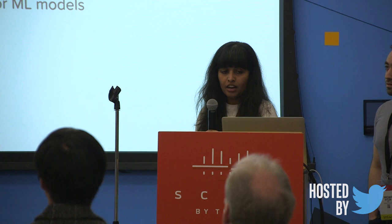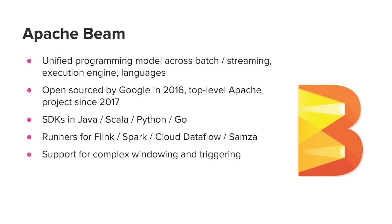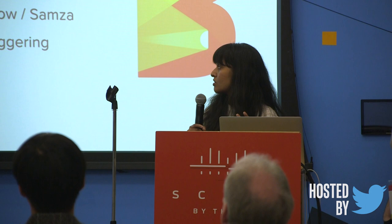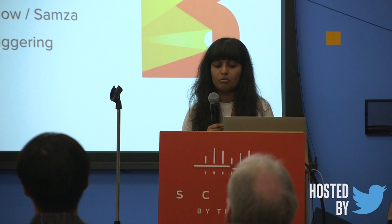At Lyft, Python is the primary language being used, but Flink currently supports APIs in Scala, Java, and SQL. So we don't want our engineers to have to learn Java to write Flink programs. For this, we have been working on supporting Beam at Lyft. Beam is a unified programming model that can be used to write both batch and stream programs. Flink as a runner is supported and Python SDKs are available. Beam also has support for complex windowing and triggering methods.